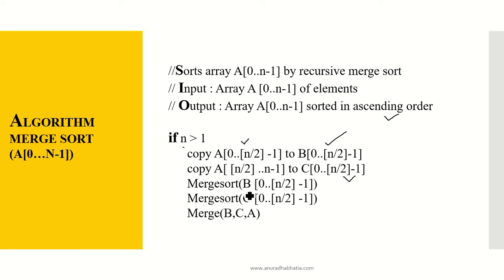Now merge sort is merge B[0 to n/2 - 1] and merge sort C[0 to n/2 - 1] and then merge B, C and A. So what is happening? The array B will be first merged into one, then array C will be merged into one. So we will get a sorted array of B, we will get the sorted array of C and then B and C will be merged into the array A.